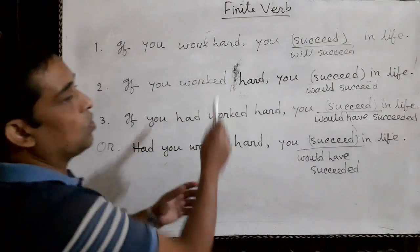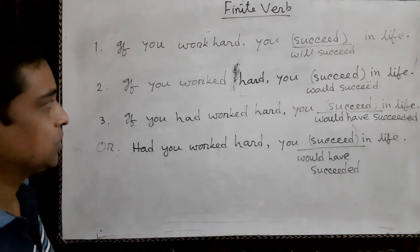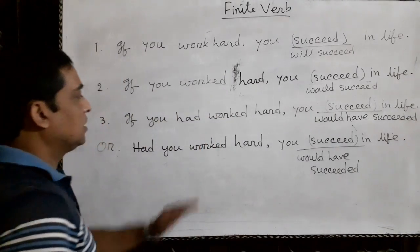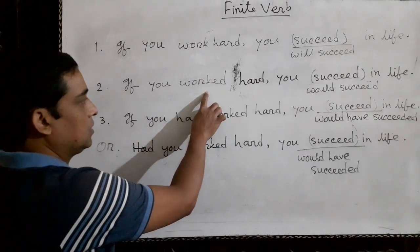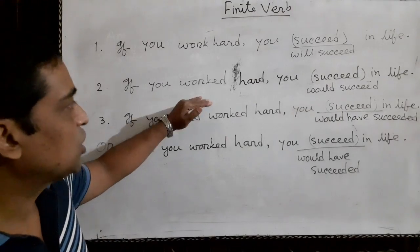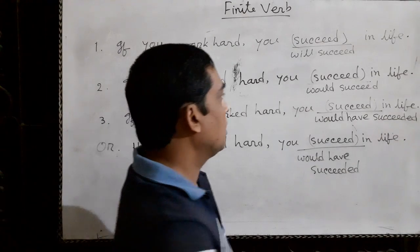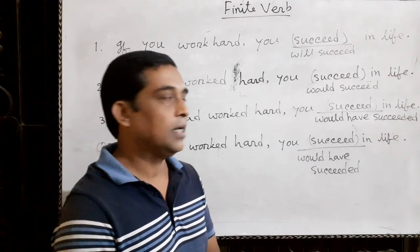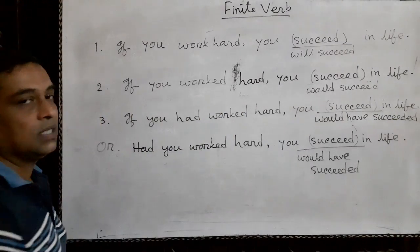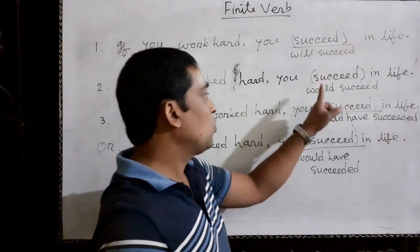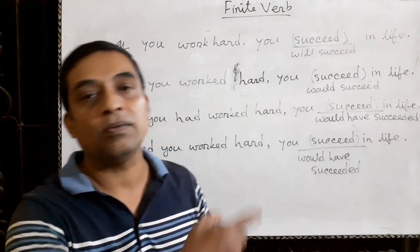Example number one is called the first conditional. Example number two is a second conditional sentence: 'If you worked hard...' Here the subordinate clause is in past indefinite tense. If the subordinate clause is in past indefinite tense, then the main clause will be 'future in the past.' We must write 'would' after the subject — or we can write 'could,' 'may,' or 'might' according to the meaning of the sentence.